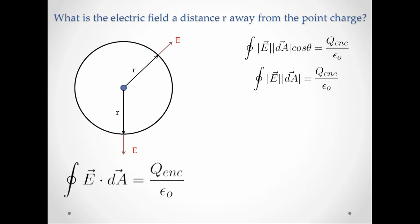No matter where we are on the surface, we see the same exact point charge at the center. And thus, we have to see the same exact electric field. The only way this is true is if the electric field is constant in magnitude on the surface. And if it's a constant, we can pull it out of the integral.